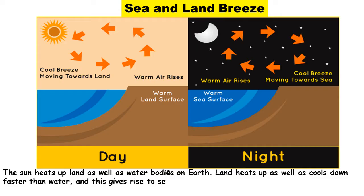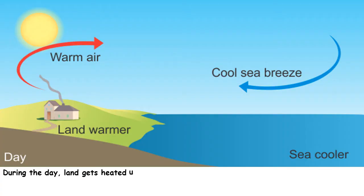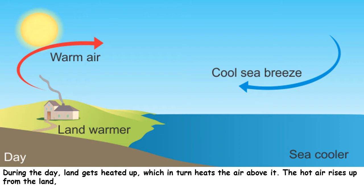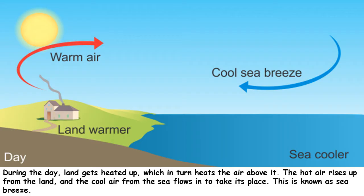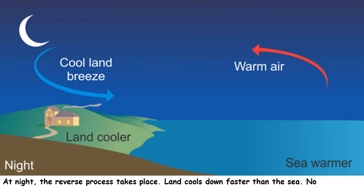Sea and land breeze: The Sun heats up land as well as water bodies on Earth. Land heats up as well as cools down faster than water, and this gives rise to sea breeze and land breeze, especially in coastal areas. During the day, land gets heated up, which in turn heats the air above it. The hot air rises up from the land, and the cool air from the sea flows in to take its place. This is known as sea breeze.